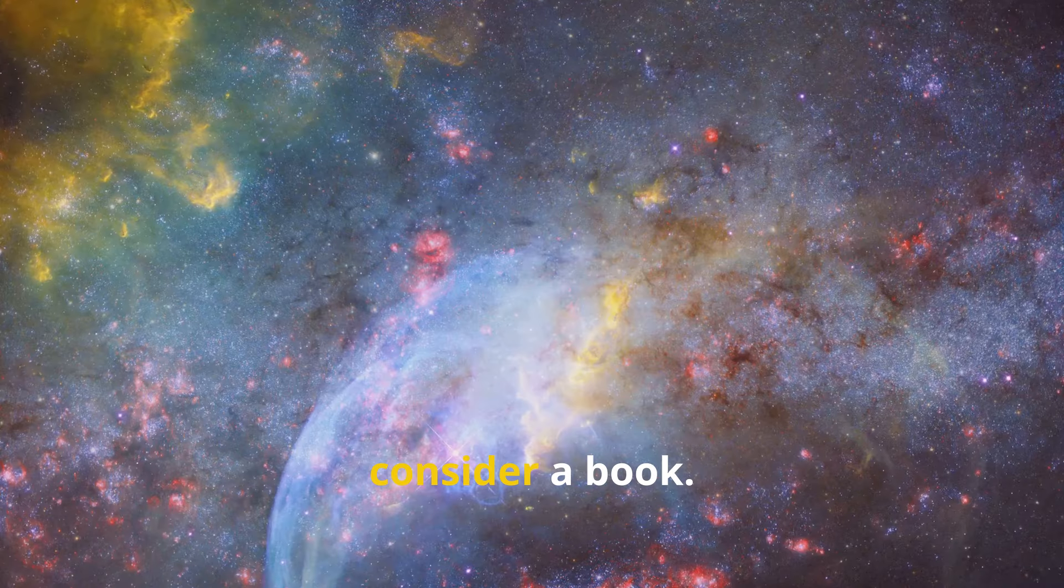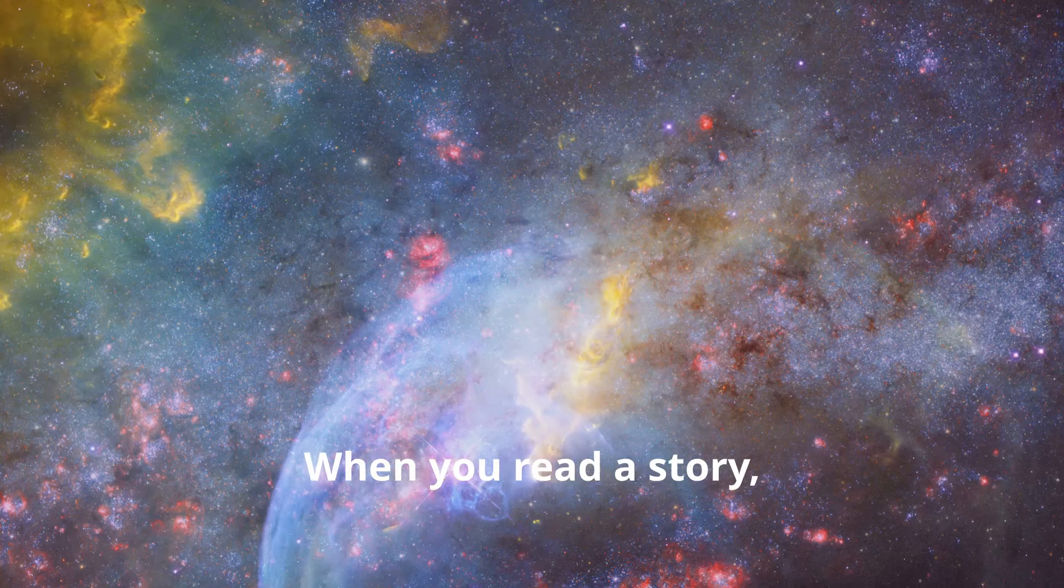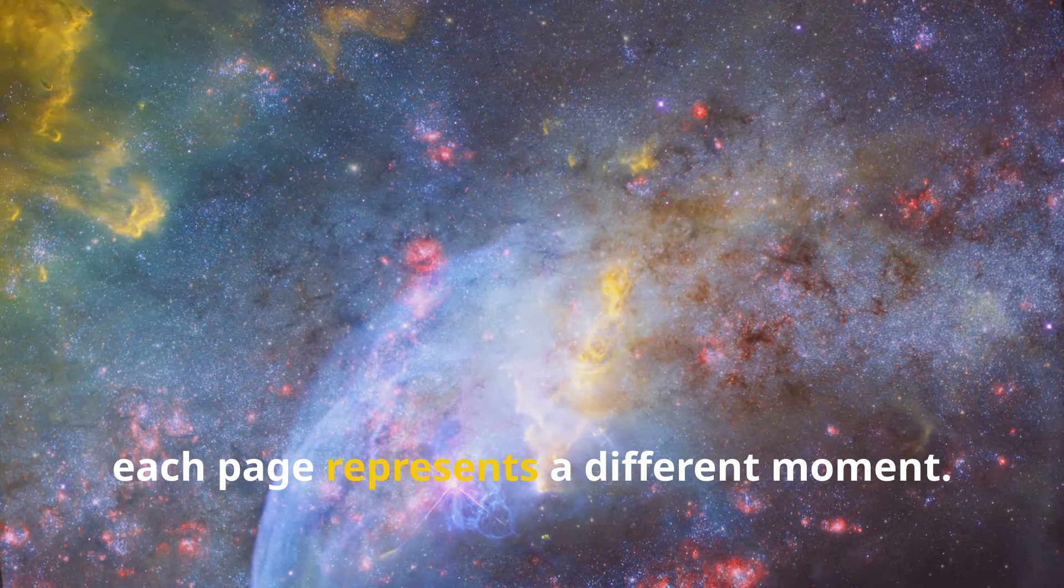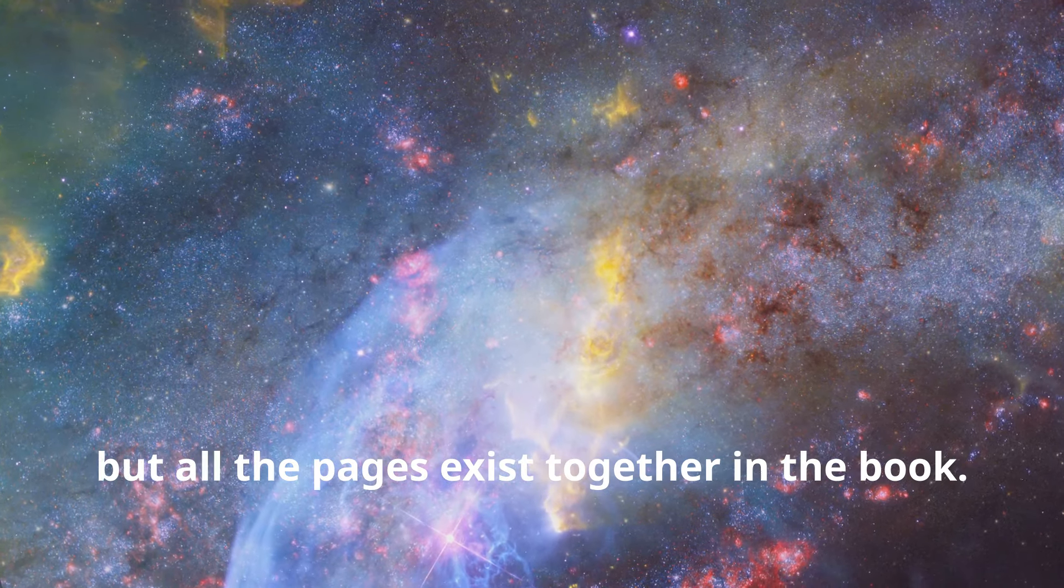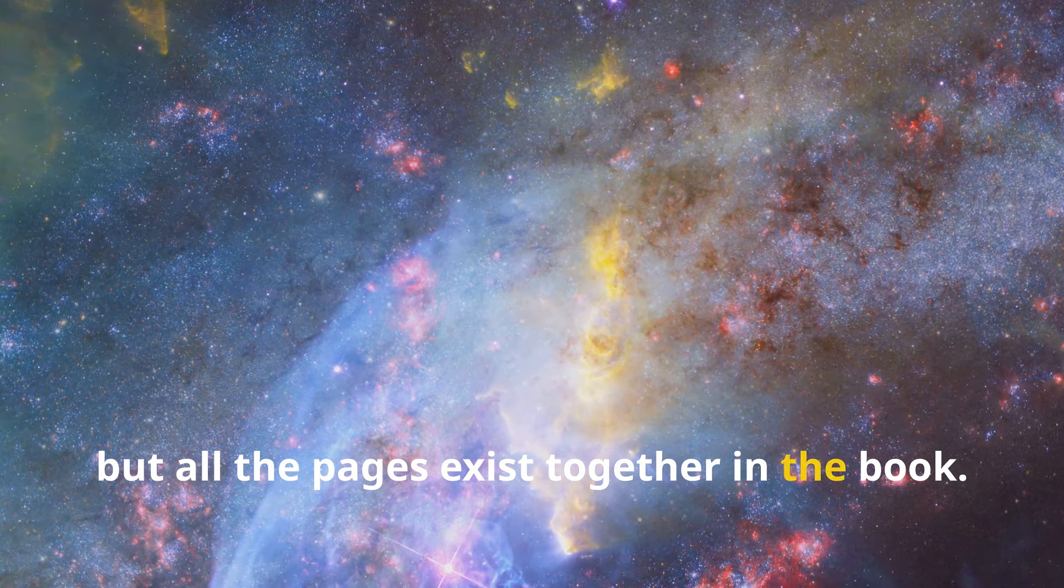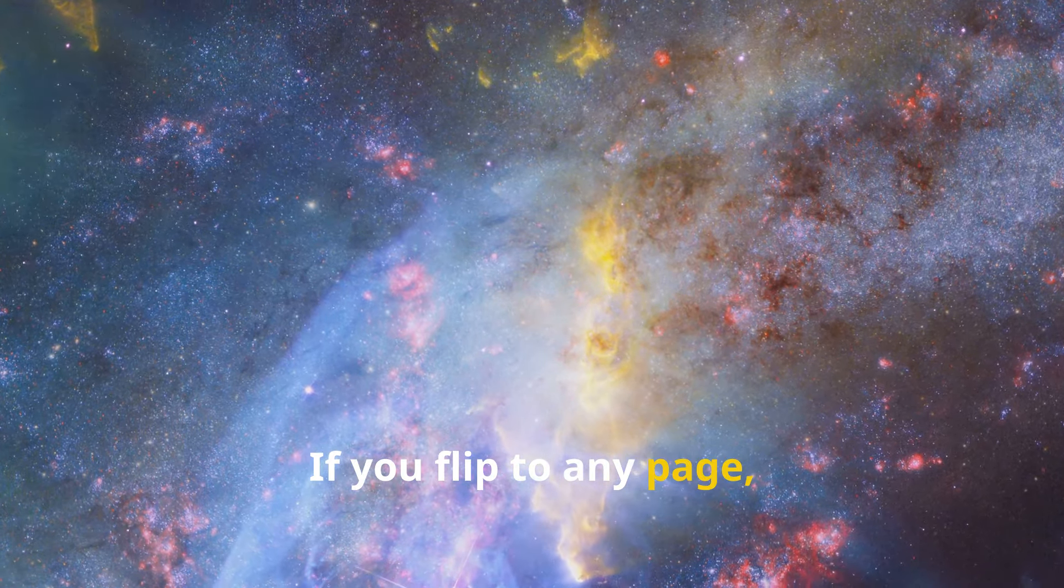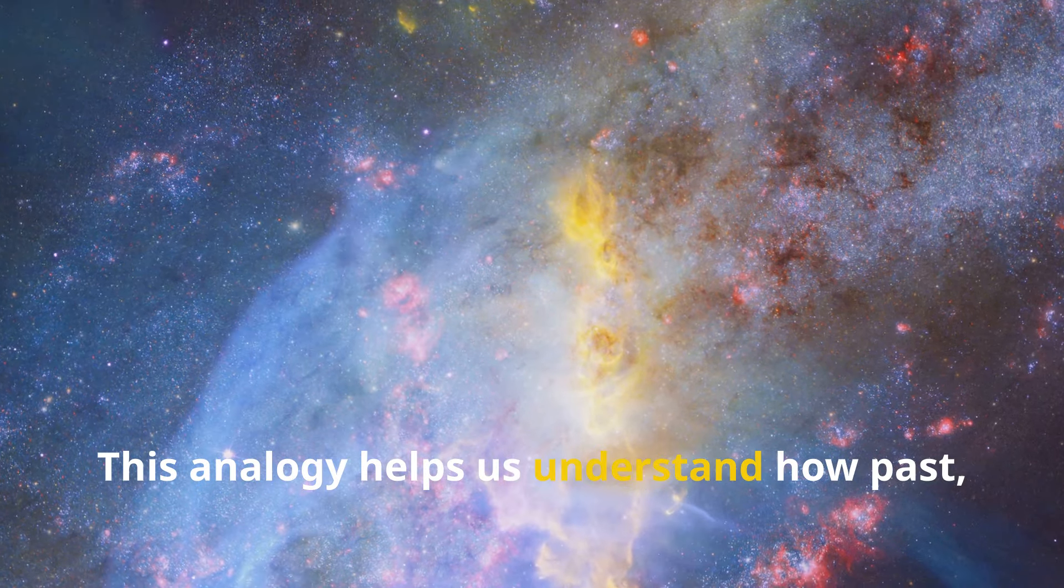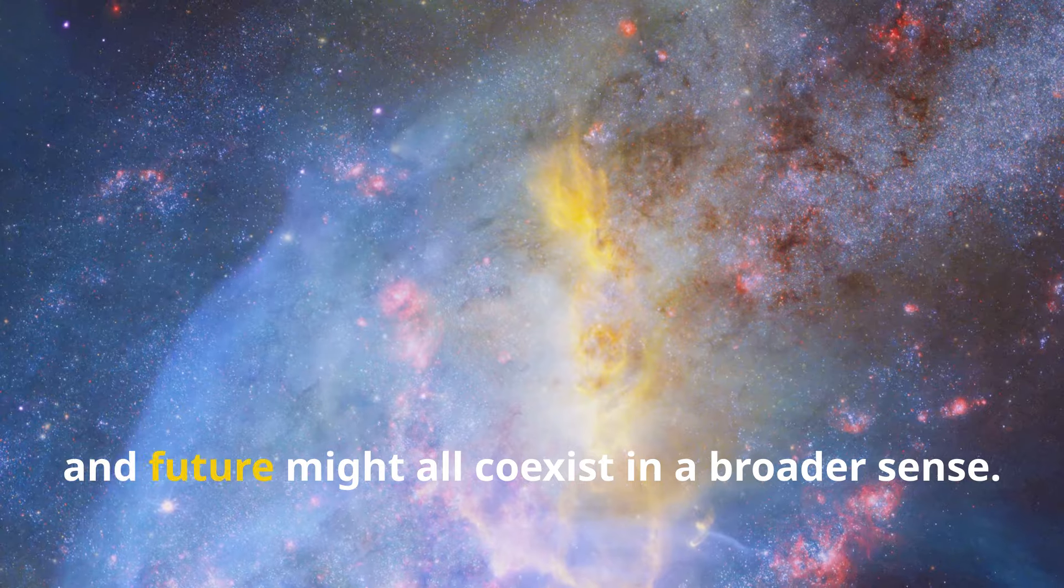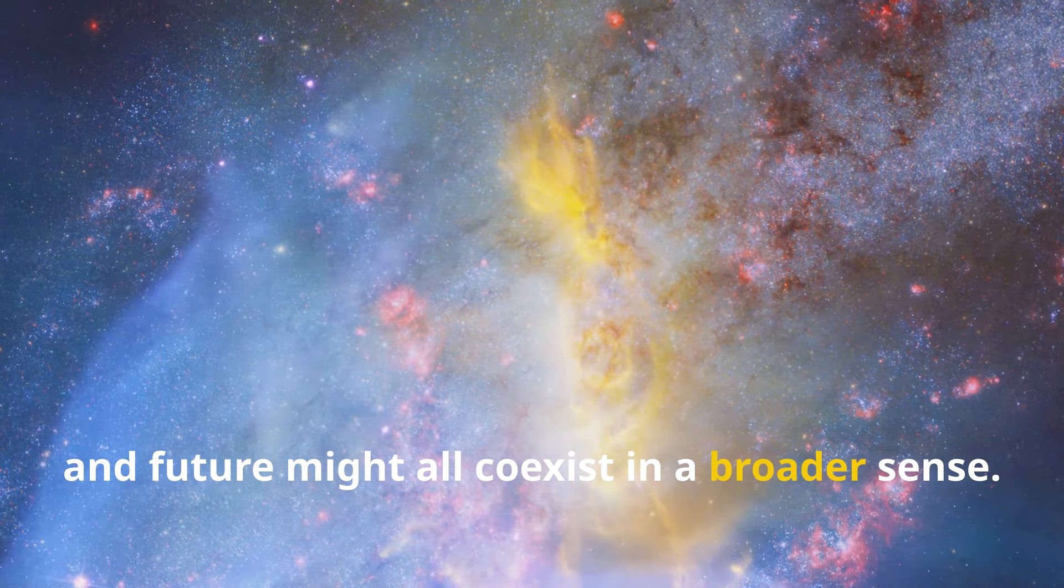To further illustrate, consider a book. When you read a story, each page represents a different moment. You experience the story one page at a time. But all the pages exist together in the book. If you flip to any page, that moment is there, waiting to be read. This analogy helps us understand how past, present, and future might all coexist in a broader sense.